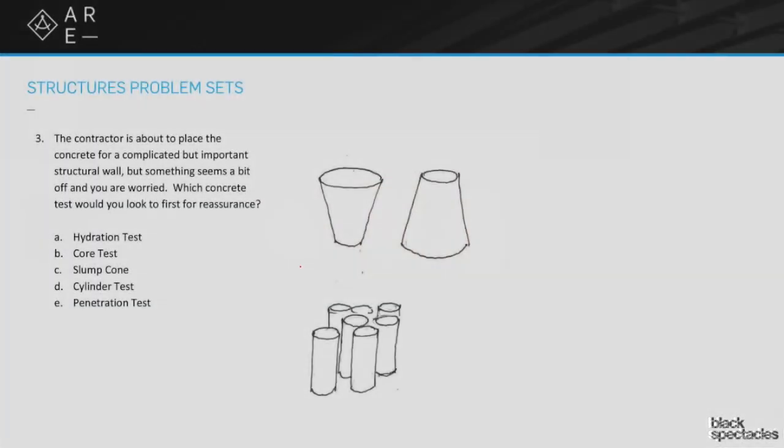So here's question number three. The contractor is about to place the concrete for a complicated but important structural wall, but something seems a bit off and you are worried. Which concrete test would you look at first for reassurance? And then we have a couple different answers. We have a hydration test, core test, slump cone test, cylinder test, and penetration test.